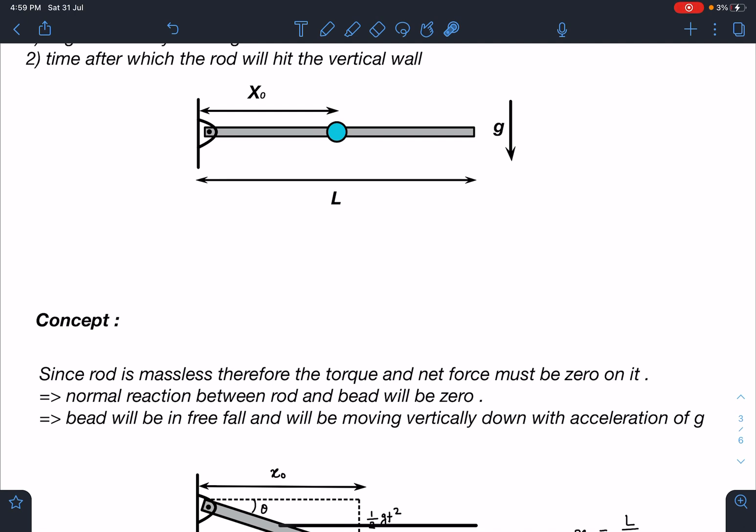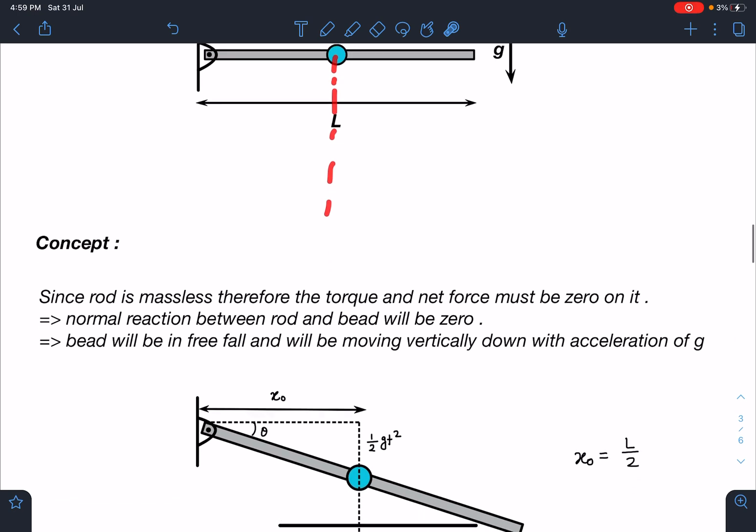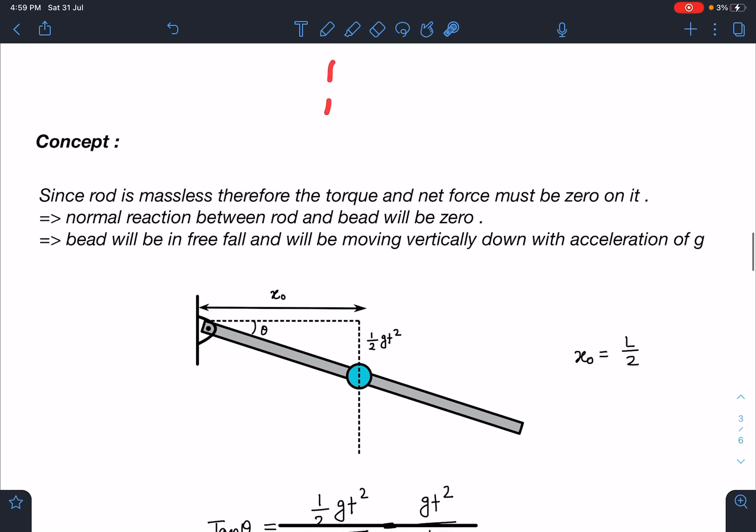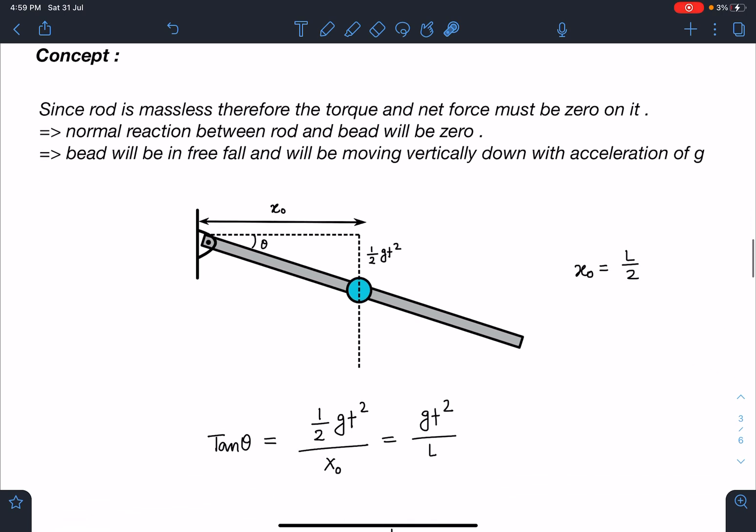This is how it will be. In that case we can say this bead will be just falling vertically down. I have written: normal reaction between rod and bead will be zero, the bead will be in free fall and will be moving vertically down with acceleration of g.